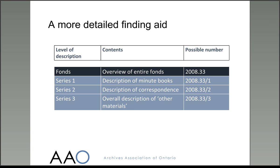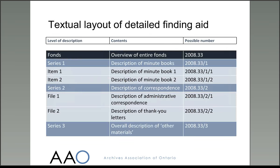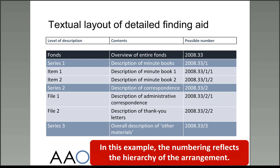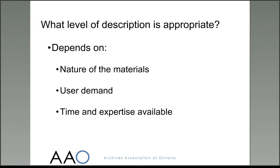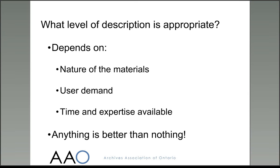In this third approach to the finding aid, the individual minute books within the first series and the files within the second series have also been described. The numbering of the items reflects their position in the hierarchy. As with arrangement, there is no right way to describe archives in terms of the amount of detail to include in a finding aid. Some things which will affect the decision are the nature of the materials — is this a particularly rare or important group of records? Will users be happy with a summary description or would more detail be helpful? And how much time and resources are available? Any description is better than nothing at all. Getting something available quickly and then coming back to add more detail when time and resources allow is always an option.